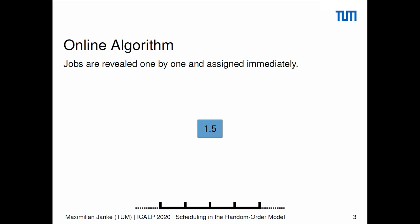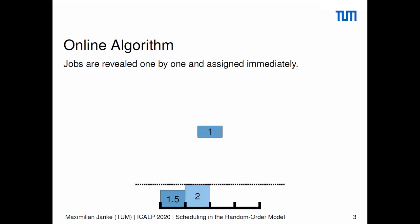Let us prove this by example. Say we are an online algorithm and now we are presented with this one job of processing time 1.5. Since all machines are identical, we can just assign it to any machine. Now, assume we want to maintain an optimal makespan — the next job has to go on an empty machine. Which one, of course, doesn't matter either. And for the next it's the same.